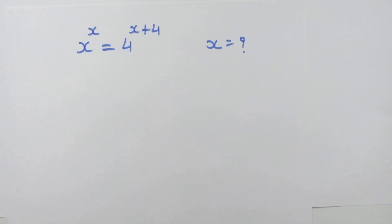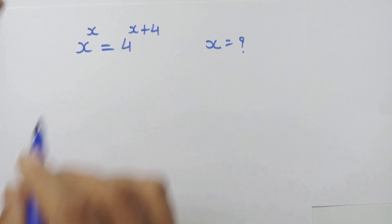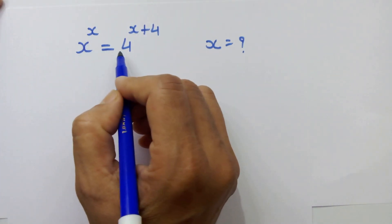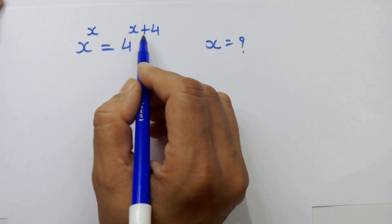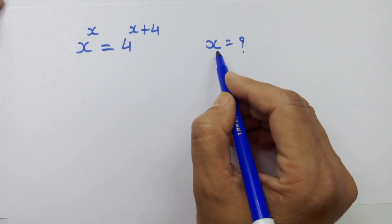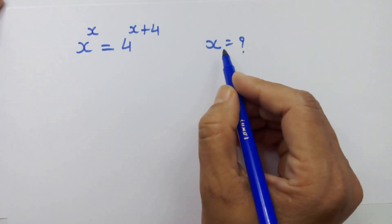Hello friends. Here we have x raised to x is equal to 4 raised to x plus 4, and we have to find out the value of x.